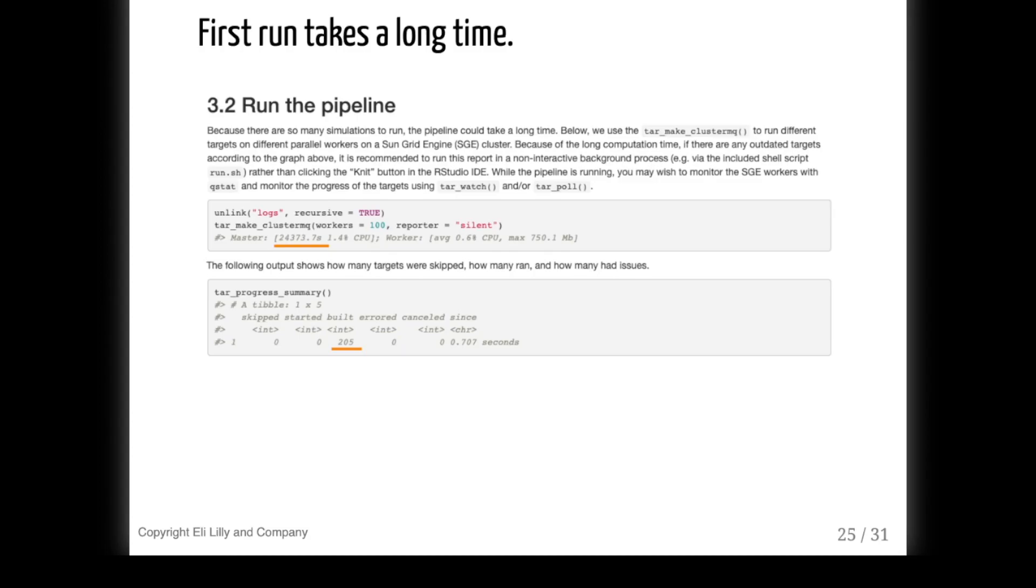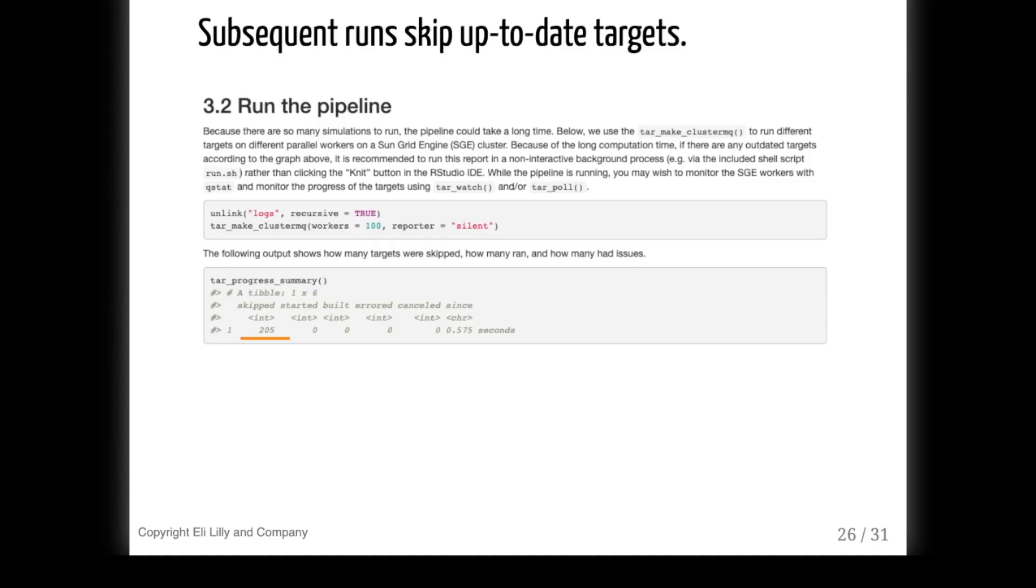The first time I ran this pipeline, it took almost seven hours to finish, despite the heavy-duty distributed computing. That's how large Bayesian computation can get sometimes. But the second time around, all the results were already up to date thanks to targets. It only took a few seconds for the whole report to re-render. So target markdown is kind of like the caching system in knitr, but taking it to the next level. And finally, in the rendered report, we look at the results.